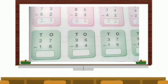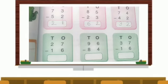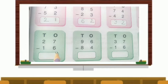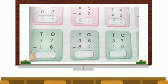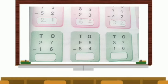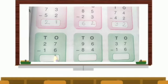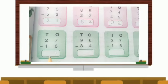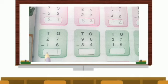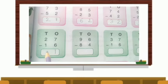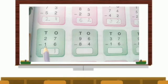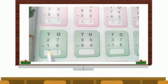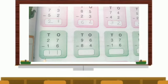Now next is 27 minus 16. Ones house: 7 minus 6, which is 1. Children, in the beginning you can use your rough copy and slowly you can work mentally. 2 minus 1 is 1. Your answer is 11.